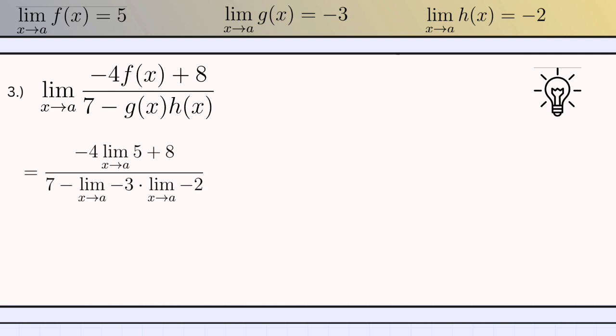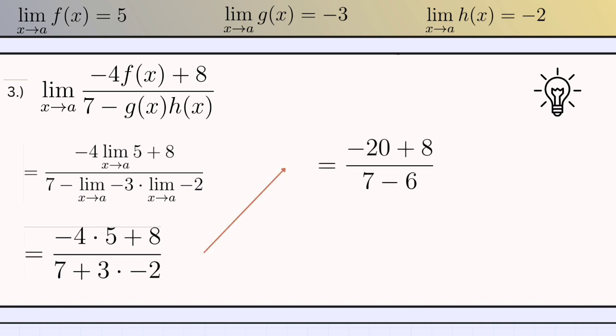Next, using theorem number 1 where the limit is the constant itself, it would be negative 4 times 5 plus 8, all over 7 plus 3 times negative 2. If we simplify: negative 20 plus 8 divided by 7 minus 6, the answer would be negative 12.